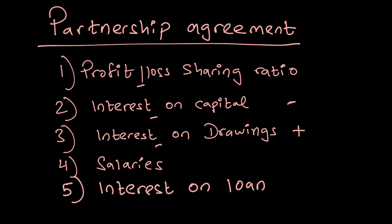Interest on loan is something you pay to a partner if that partner has given a loan to the business. If they had invested their money elsewhere they would have an opportunity cost, so interest on loan is paid out of the partnership profits as well — that's also an appropriation. At the time of forming a partnership, the agreement lists down all these important terms to govern the structure.